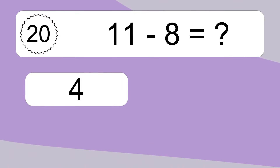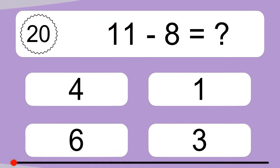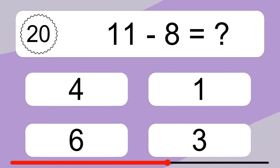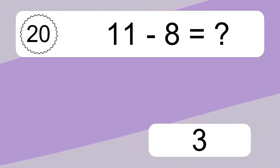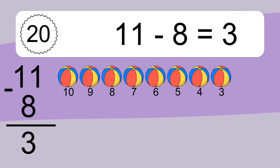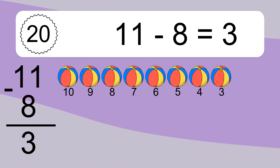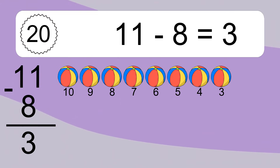11 minus 8 equals what? 11 minus 8 equals 3. Let's count it: 10, 9, 8, 7, 6, 5, 4, 3.